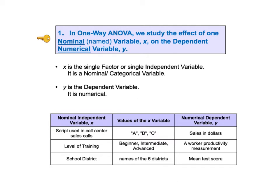In the table at the bottom of the slide, we give three examples. In the first example, the scenario is a telemarketing call center. We are testing out three scripts for the callers to use. The category is scripts, and these three scripts have the names A, B, and C — these names are the values of the nominal variable X. In the second example, the X variable is the level of training, with possible values beginner, intermediate, or advanced. In the third example, the X variable is school district, and the values of X are the six names of six school districts.